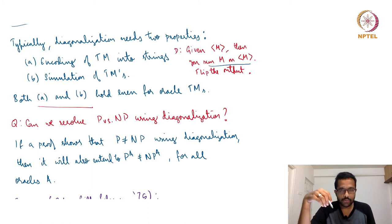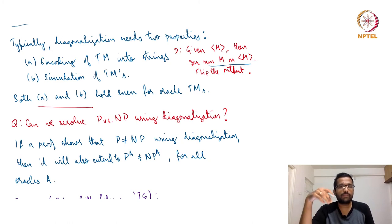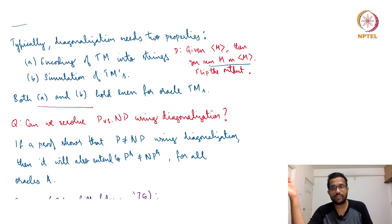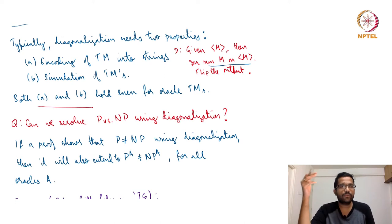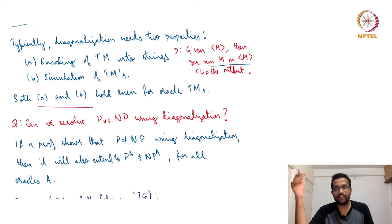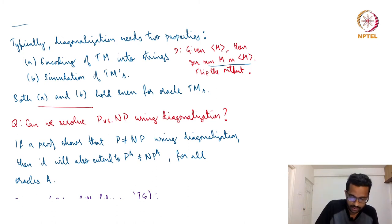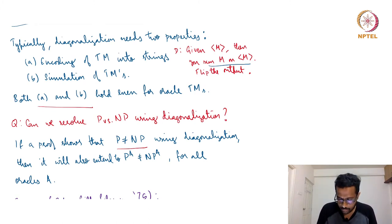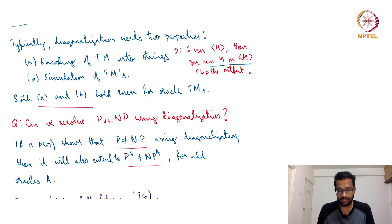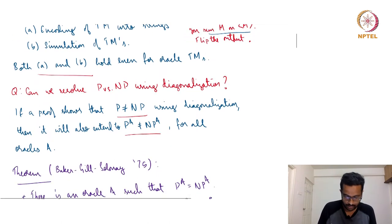Because of the relativization property we just noted, if there is a proof that P equals NP using diagonalization, then the same proof should relativize to show that P^A equals NP^A for any oracle A. Similarly, if there is a proof that P does not equal NP using diagonalization, then that should also relativize, meaning P^A is not equal to NP^A for any oracle A.